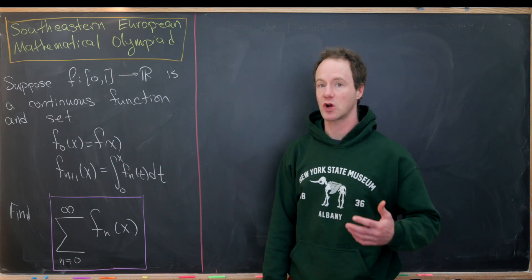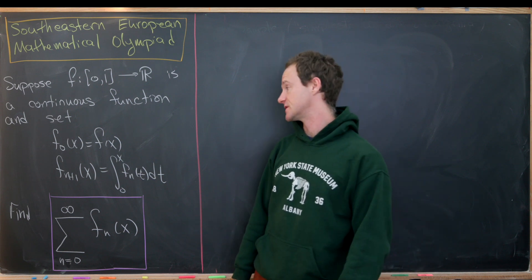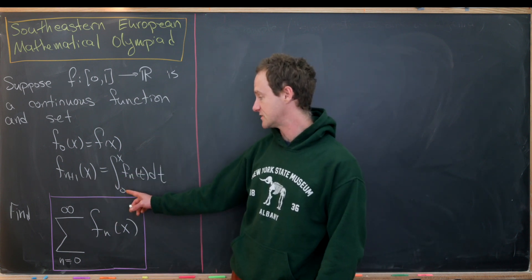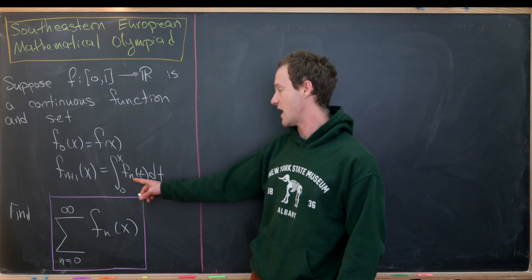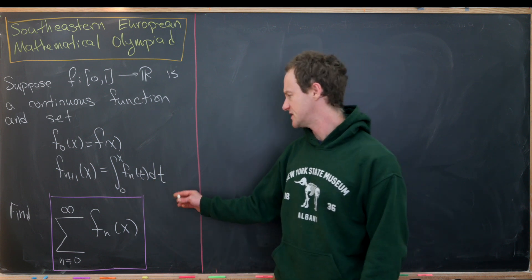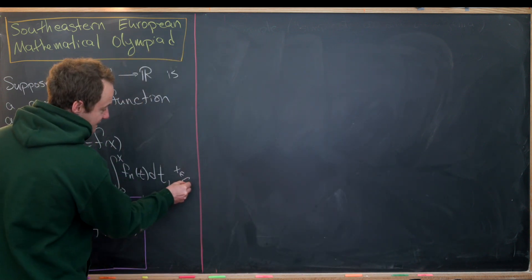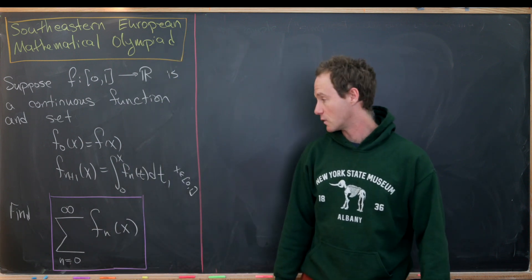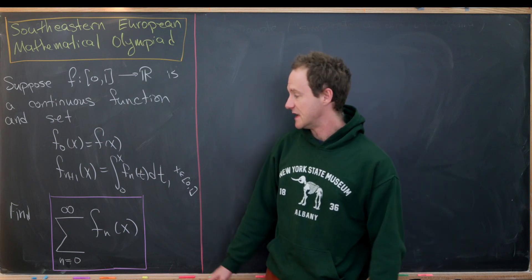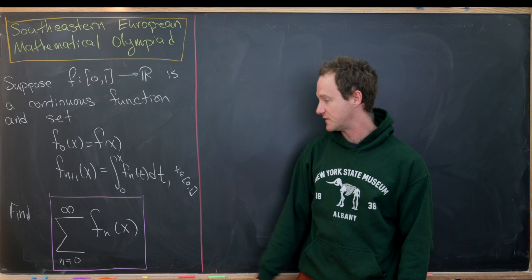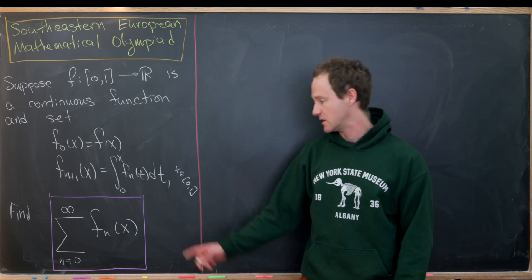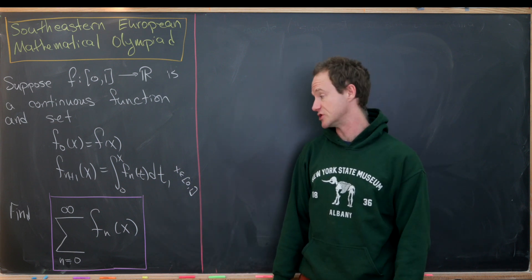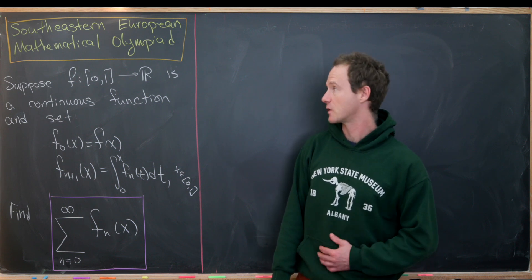Next we're going to define recursively a sequence of functions. We'll set f₀ equal to f, and then f_{n+1}(x) will be equal to the integral from 0 to x of f_n(t) dt, for values of x between 0 and 1. Our goal is to find a closed form for the sum as n goes from 0 to infinity of f_n(x) on [0,1], which implicitly requires showing this converges for all x in [0,1].